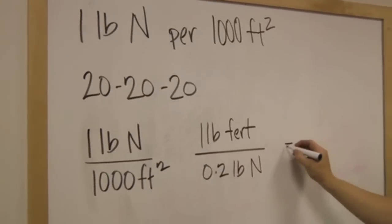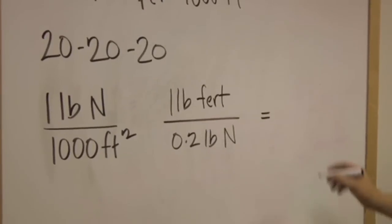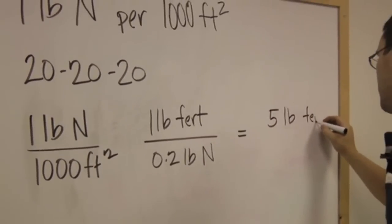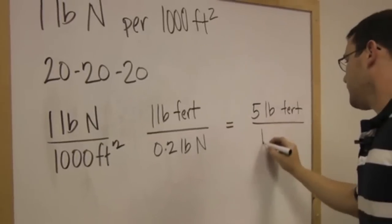So if we multiply that across, that gives us 5 pounds of fertilizer per 1,000 square feet.